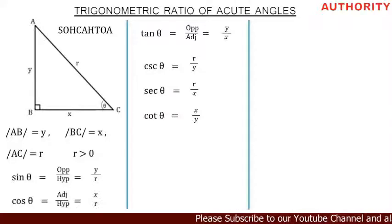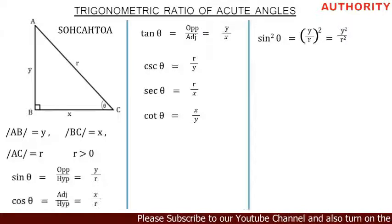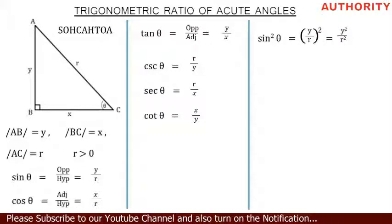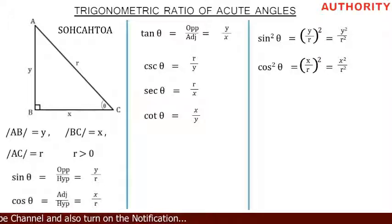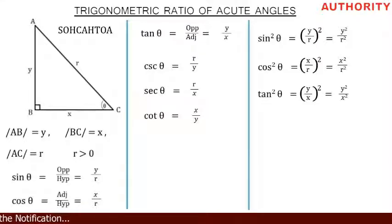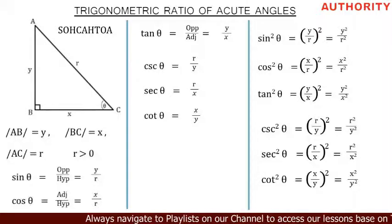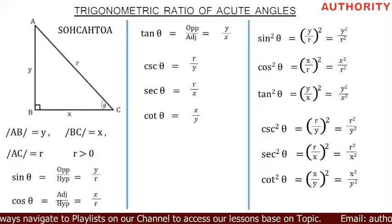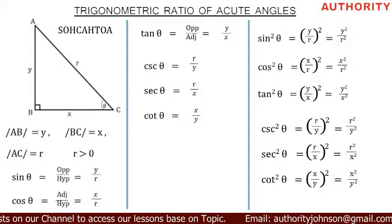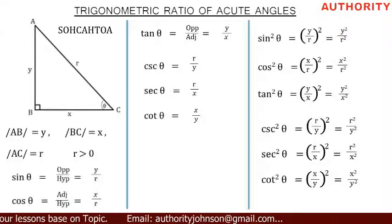Now let's find the squared values. Sin squared theta equals y² over r². Cos squared theta equals x² over r². Tan squared theta equals y² over x². Cosec squared theta equals r² over y². Sec squared theta equals r² over x². Cot squared theta equals x² over y².